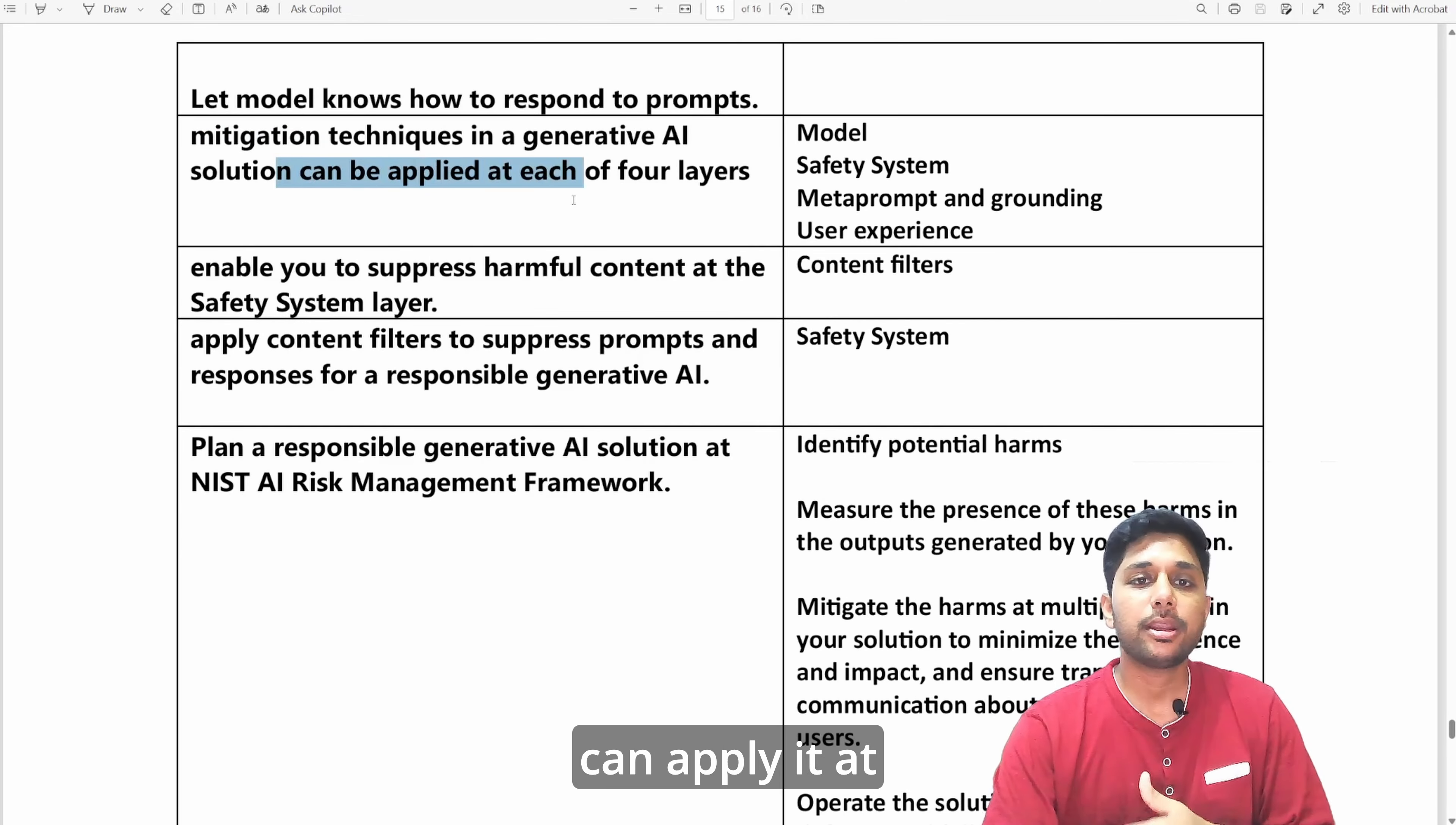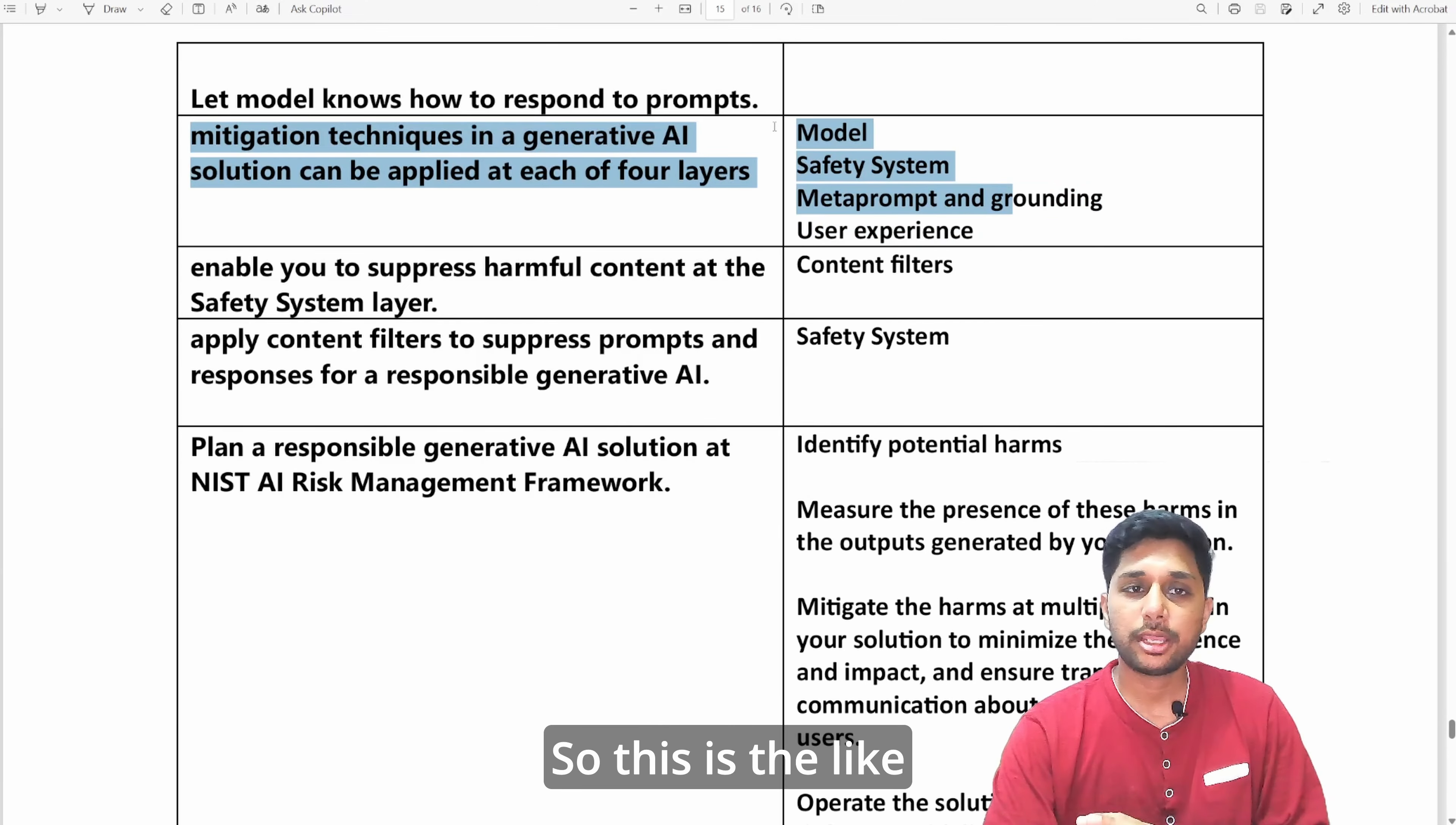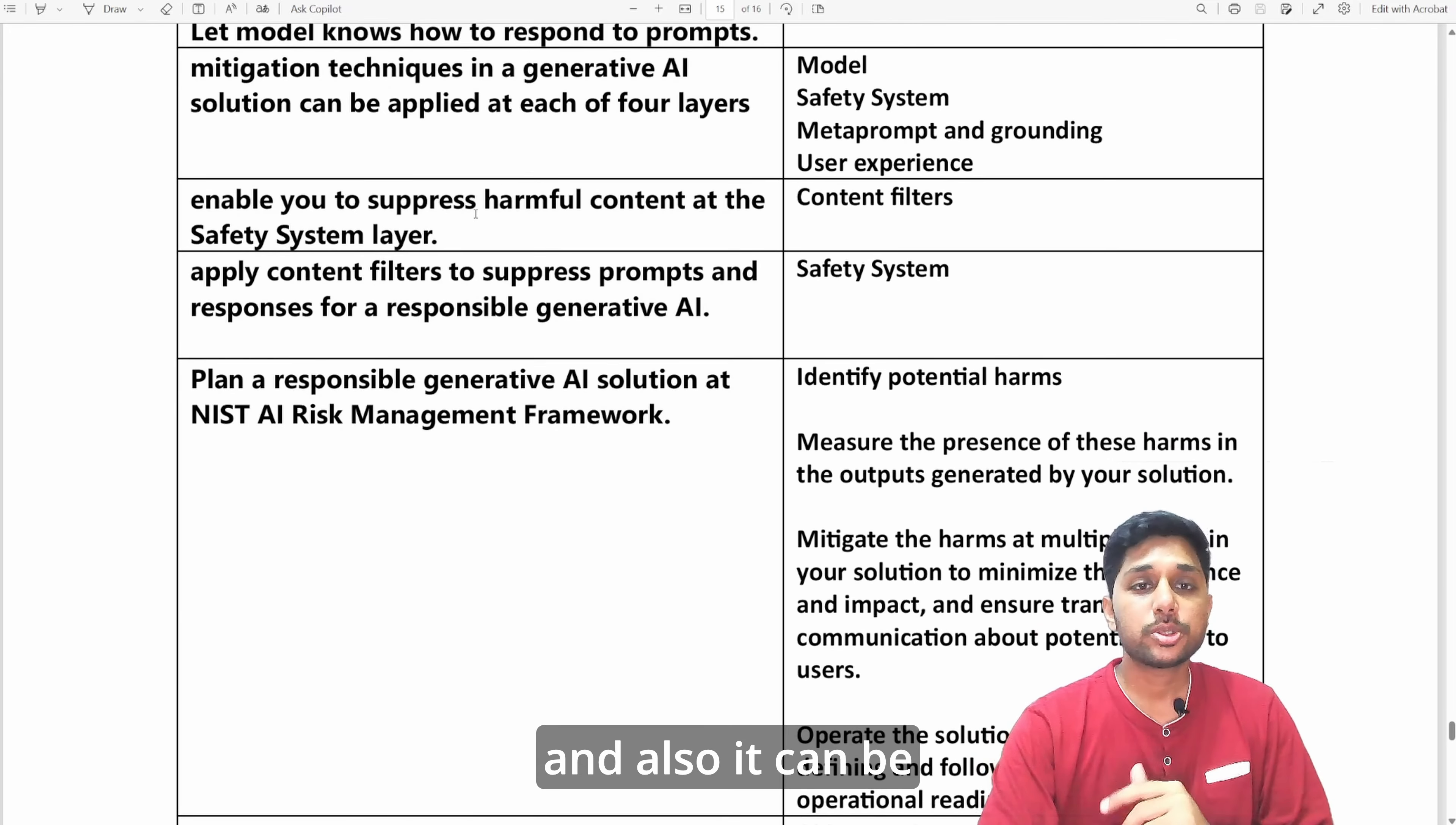Another question can come up like what are the mitigation techniques in generative AI solution which can be applied at each of these four layers? What are those four layers? One is the model layer, another is the safety system layer, meta prompt and grounding layer, and user experience layer.